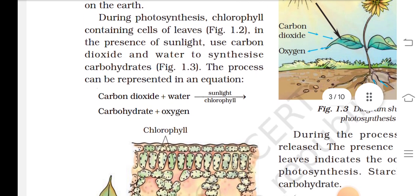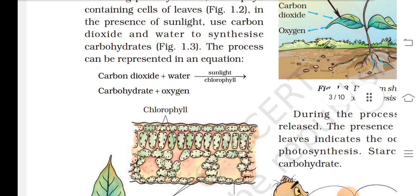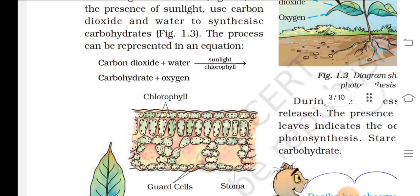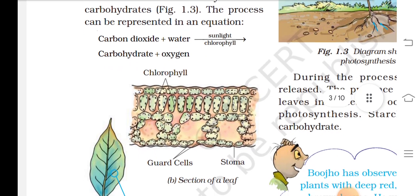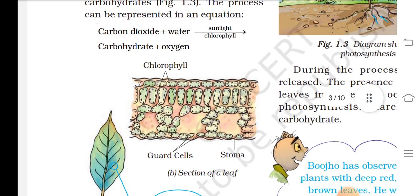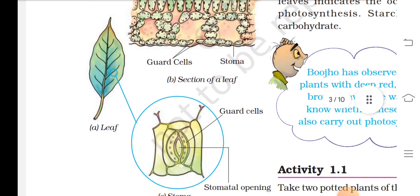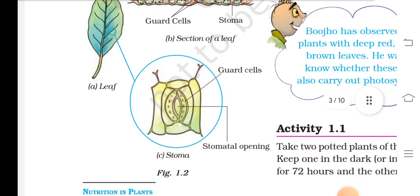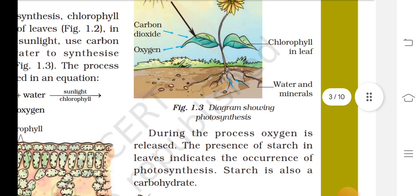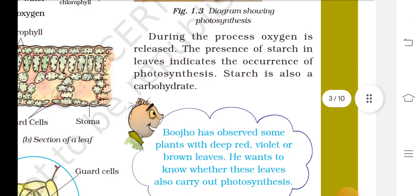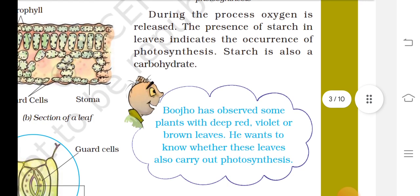During photosynthesis, chlorophyll-containing cells of leaves, in the presence of sunlight, use carbon dioxide and water to synthesize carbohydrates. The process can be represented as an equation: carbon dioxide + water, in the presence of sunlight and chlorophyll, yields carbohydrate + oxygen. During the process, oxygen is released. The presence of starch in leaves indicates the occurrence of photosynthesis.